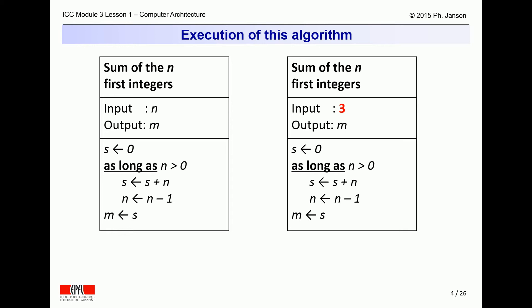We can, for instance, provide the integer 3 as the input to the algorithm for the value n. If we then execute the algorithm, we see that it starts by comparing n, which is now 3, to 0. And since 3 is greater than 0, the algorithm first assigns the sum of s, which is currently 0, and n, which is currently 3, to the value s itself, which thus becomes 3. And second, it decrements n by one unit from 3 to 2, and then returns to the test comparing n to 0.